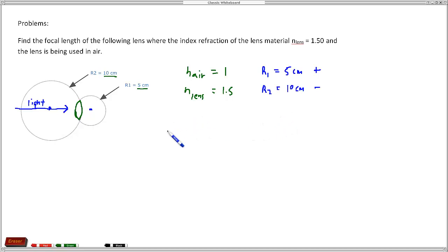So now it's just a matter of plugging in these values. So we know the lens maker formula is 1 over the focal length equals the index of refraction for the lens over n for air in this case minus 1, times 1 over R1 minus 1 over R2.